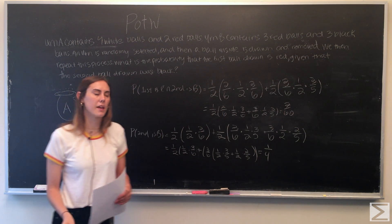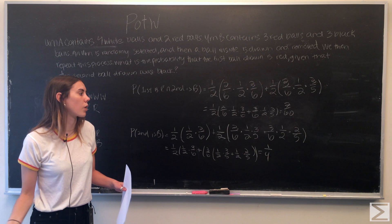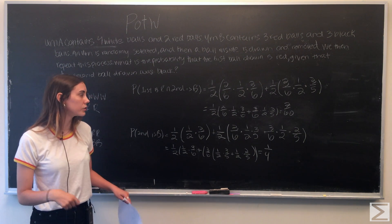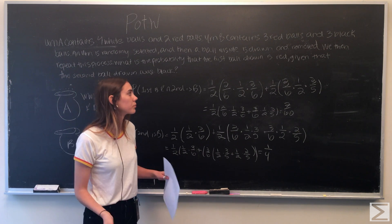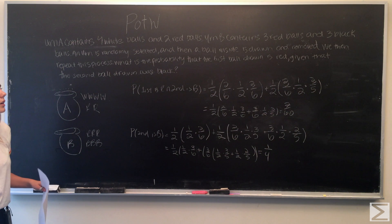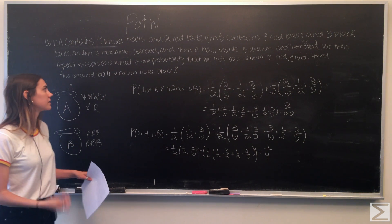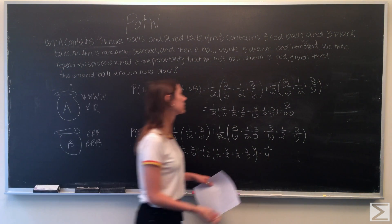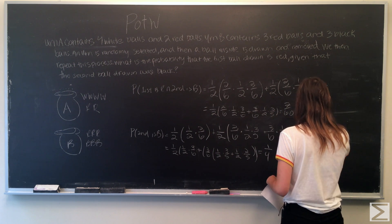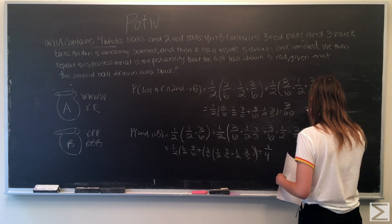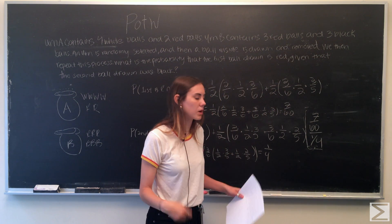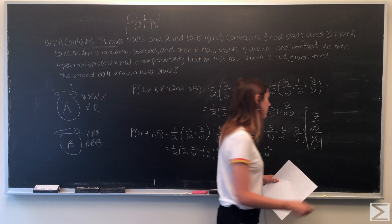Now we have both the numerator and denominator. Putting them into a fraction, the conditional probability that the first ball is red given that the second ball drawn was black is 7/60 divided by 1/4, which equals 7/15.